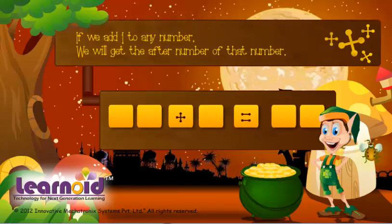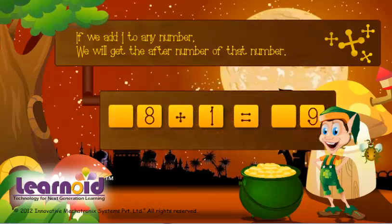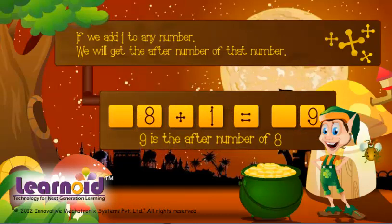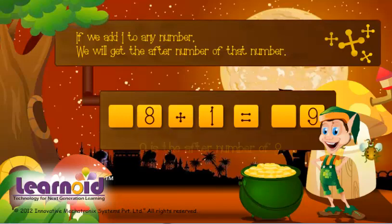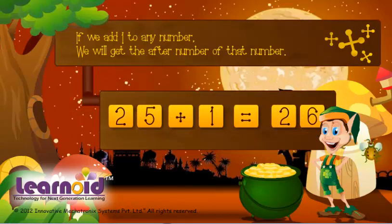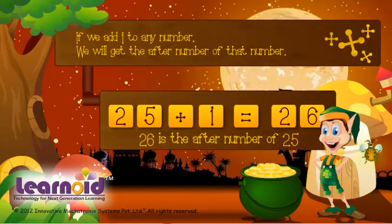If we add 1 to any number, we will get the after number of that number. 8 plus 1 is 9. 9 is the after number of 8. 25 plus 1 is 26. 26 is the after number of 25.